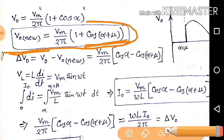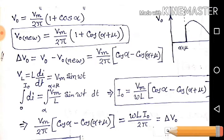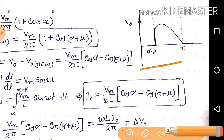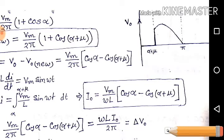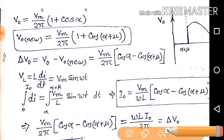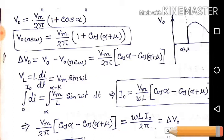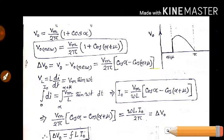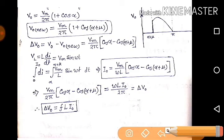Now, calculate the change in output voltage — meaning how much the output voltage changes after introducing the source inductance. From the graph, you can observe that due to the effect of source inductance, the average output voltage decreases. To find how much it decreases, just subtract old minus new. So it becomes: delta V_O = V_M / 2pi × (cos alpha − cos(alpha + mu)).